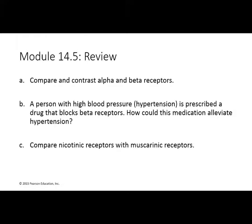Compare the alpha and beta receptors with the nicotinic and muscarinic receptors. Also consider beta blockers: look at what beta-1 does, and see how blocking beta-1 might help a person with high blood pressure.